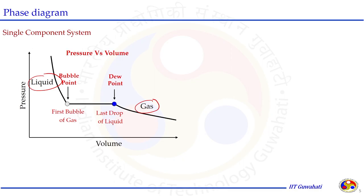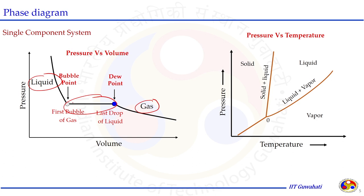This is a typical example of any fluid on the pressure-volume diagram. As we change operating conditions such as pressure and volume, the substance becomes either liquid, gas, or a mixture in the two-phase region. On the pressure-temperature diagram — as seen in thermodynamics — we observe phase changes from solid to vapor, vapor to liquid, liquid to vapor, and so on. In this typical diagram on the pressure-temperature scale, we see solid in one region, liquid in another, and vapor in a third, with a triple point where all phases converge.